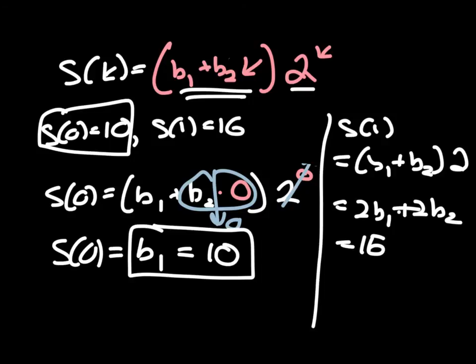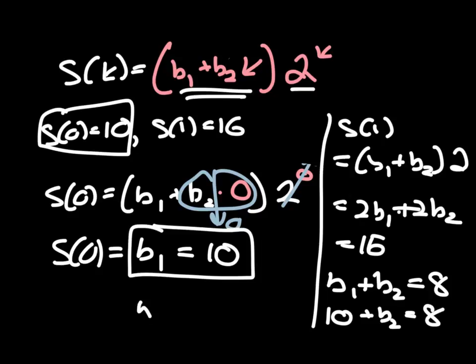And what this is telling me, I have an equation here that says 2b₁ + 2b₂ = 16. Let me divide both sides of that equation by 2, and get b₁ + b₂ = 8. And now finally, b₁ is equal to 10. So I can make a little substitution here very quickly. And if b₁ is equal to 10, then that means that b₂ must be negative 2.